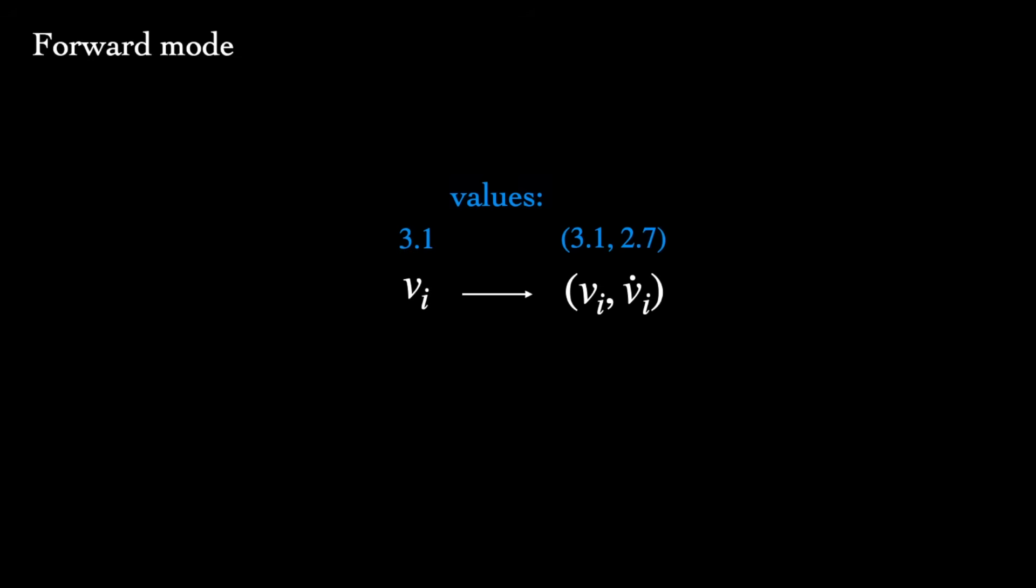There are two main versions of autodiff, forward mode and reverse mode. We'll first take a look at forward mode, the conceptually simpler of the two. Forward autodiff involves augmenting each intermediate variable during evaluation of a function with its derivative. So instead of individual floating point values flowing through a function, we can think of these as being replaced by tuples of the original intermediate values, also called primals, paired with their derivatives, also known as tangents.